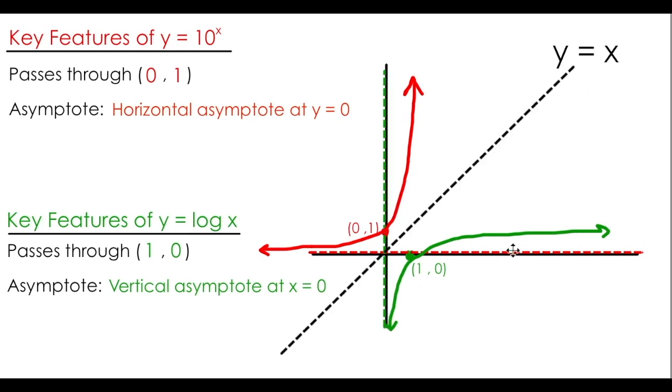Remember, because the log function is the inverse of the exponential function, all of the points on the graph of log of x can be produced by reflecting the points on the original function over the line y equals x. 0, 1 becomes 1, 0. 1, 10 on the exponential becomes 10, 1 on the logarithm. This can be done for any number of points to develop this sketch.